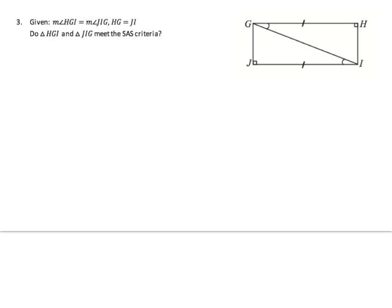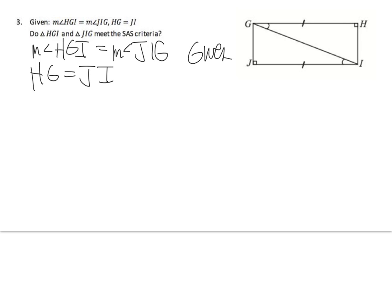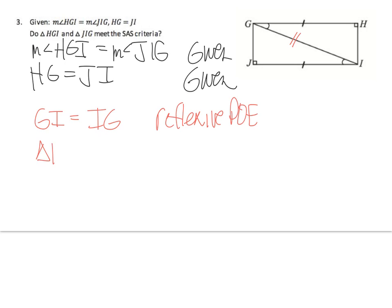Given: the measure of angle HGI equals the measure of angle JIG, and HG equals JI — both marked and given. We can also say GI equals IG by the reflexive property, since the two triangles share that side. Therefore, triangle HGI is congruent to triangle JIG because of SAS.